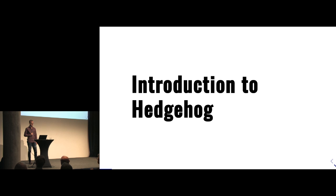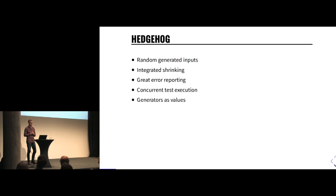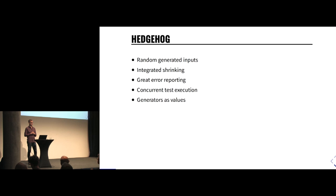I'm not going to introduce property-based testing in full — I don't have time for it. Hedgehog is a property-based testing framework that can do randomly generated inputs, as most frameworks do. It has integrated shrinking, so you don't have to implement shrinking for your generators manually. It has very nice error reporting, supports concurrent test execution, and generators are values. So it's not driven by types and type class instances; instead, generators are values you map over using the functor instance, combine with applicative, and chain with monad instances.